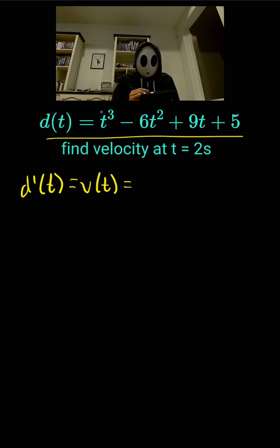And in order to find the derivative, we use the power rule, which gives us 3t squared minus 12t plus 9. Now we plug in the time at 2 seconds.